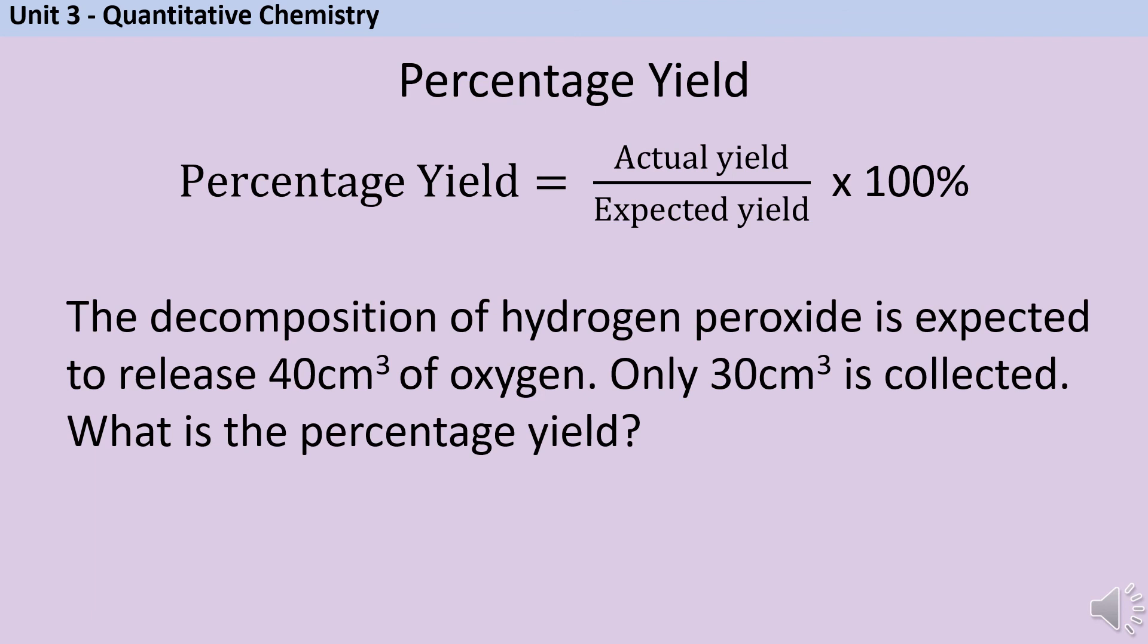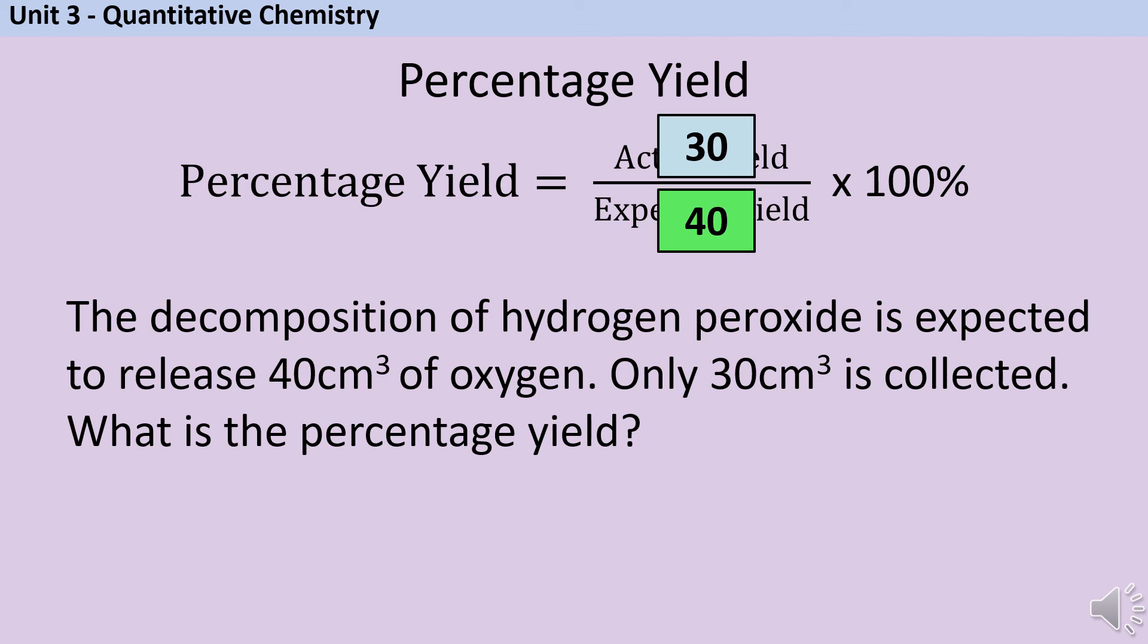The decomposition of hydrogen peroxide is expected to release 40 centimetres cubed of oxygen. Only 30 centimetres cubed is collected. What is the percentage yield? Now apart from the fact that this is given as volumes rather than masses, there's nothing tricky here at all. I was expecting to make 40 centimetres cubed, I've actually made 30 centimetres cubed. So 30 divided by 40 times by 100% is 75%. My percentage yield is 75% of what I expected or hoped it would be. So questions like that are really straightforward and probably only worth a mark if they come up.